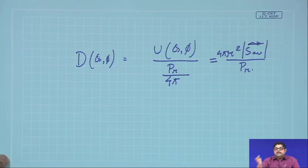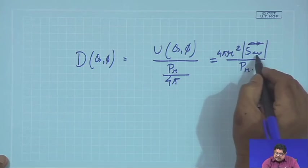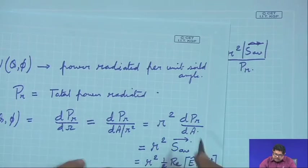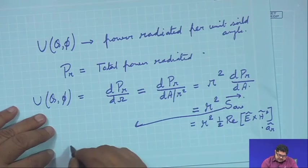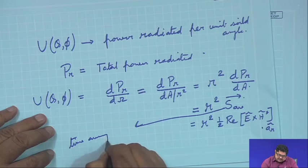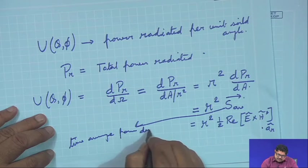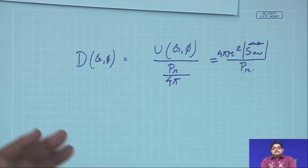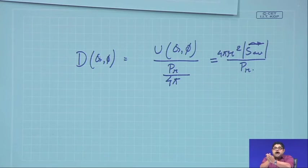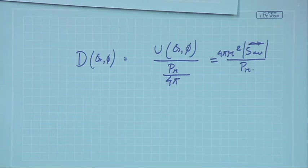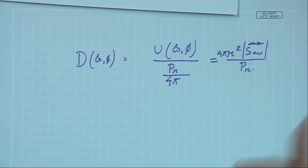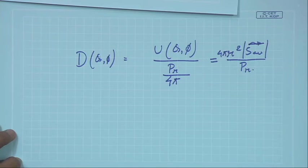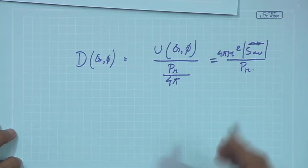At different directions I can calculate the power density S_av, which is the time-average power density. This gives an idea that at this solid angle, how much better my antenna is compared to an omni-directional one. If the antenna's directive performance is the same as omni, then D(θ, φ) will be 1 in that direction. If it is more than 1, I have a better-directed antenna.